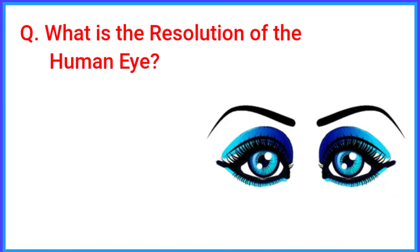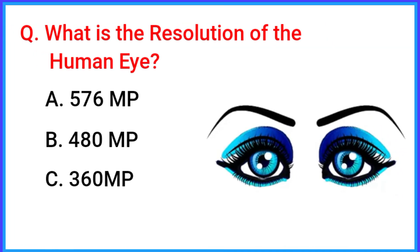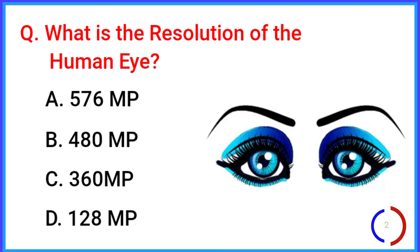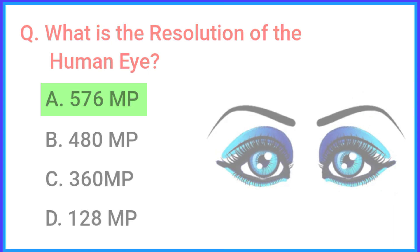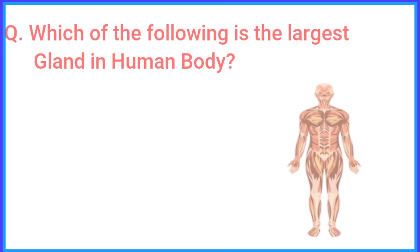What is the resolution of the human eye? The correct answer is option A: 576 megapixels.